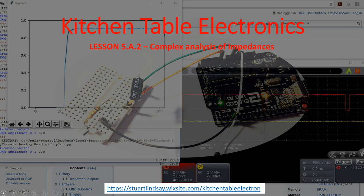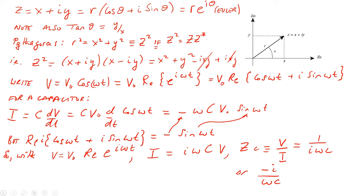Kitchen Table Electronics, Advanced Topics for Lesson 5, Number 2: Complex Analysis of Impedances. Let's start by remembering what a complex number is. By the way, I'm not going to try and write the math out real time with my glitchy Microsoft pen, so I hope I go through this slowly enough for you.